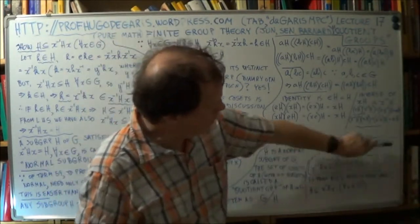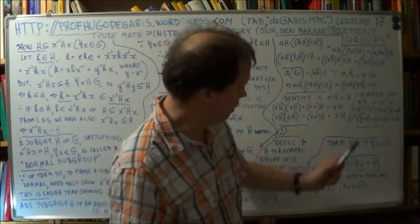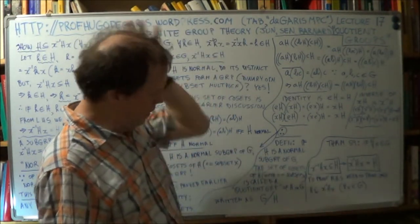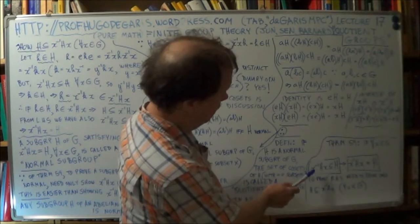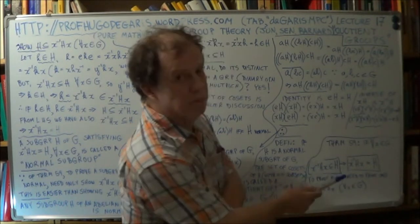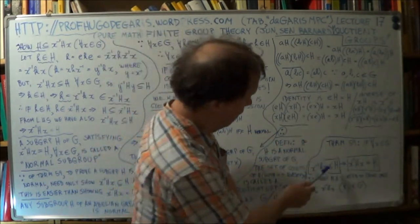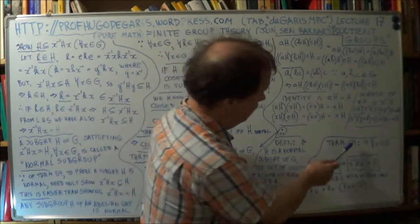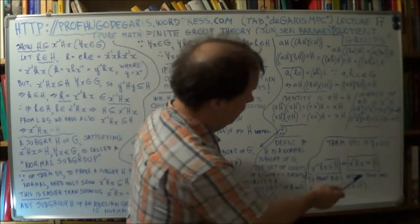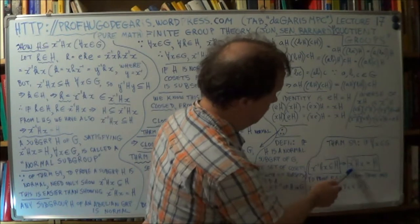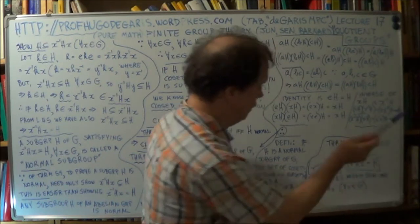I've left this little piece here on the board from the previous session — it's Theorem 59. If you have the condition X inverse, subgroup H, times X, where X is any member of your group G, and if that's a subset of H, then Theorem 59 says you can actually make this stronger: you can derive from it that you actually have an equality. So this set is the same as H.